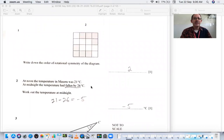Here we have the first question, write down the order of rotational symmetry of the diagram. These four blocks up here are shaded and these four blocks down here are shaded. Rotational symmetry means as you turn this diagram in a circle either clockwise or counterclockwise, how many times you get to a place where there's no recognizable difference. That would be two.